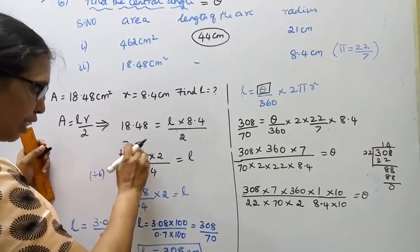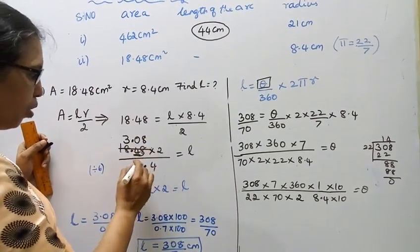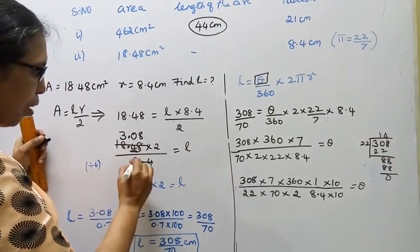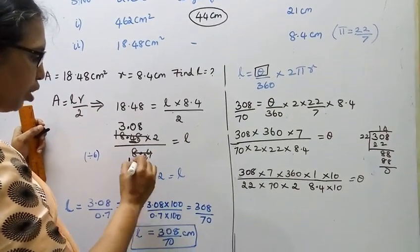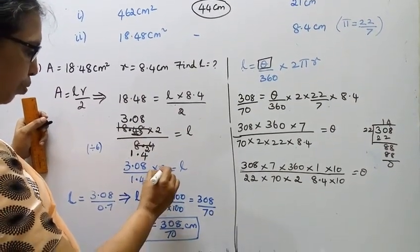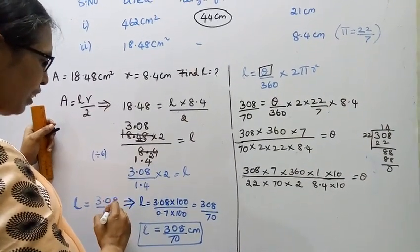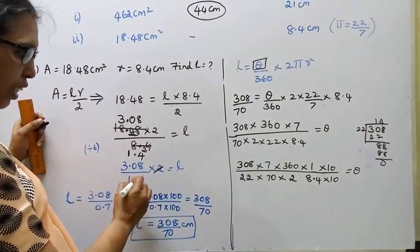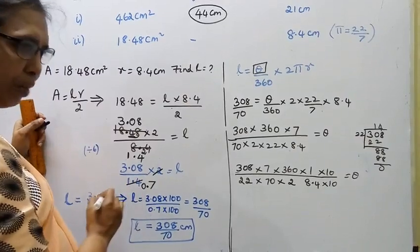Continuing: 48 divided by 6 is 8, balance. Then 3.08 by 1.4 into 2 upon 7. Cancel: 1.4 by 0.7, then 2 by 7 gives 14.